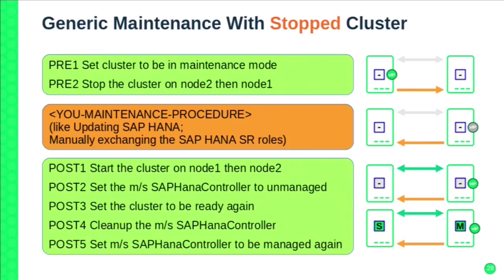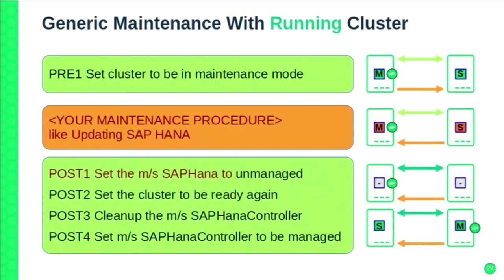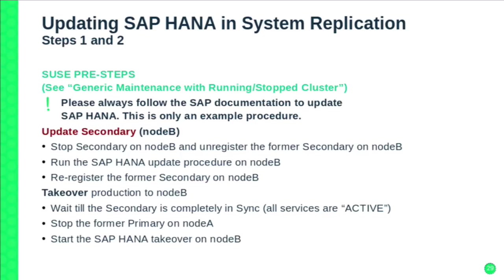We have very good experience with both those procedures. For example, a customer once had a system replication running but then came the day to migrate from the original database — loading a lot of data into SAP HANA. They didn't want the cluster making any decisions to take over during that time. I told them to just run the generic maintenance procedure, and in the orange field instead of updating HANA, they just did the initial data load or takeover of customer data. I told them on Friday how to do it, and Monday they came back — we are online. It just worked like a charm.